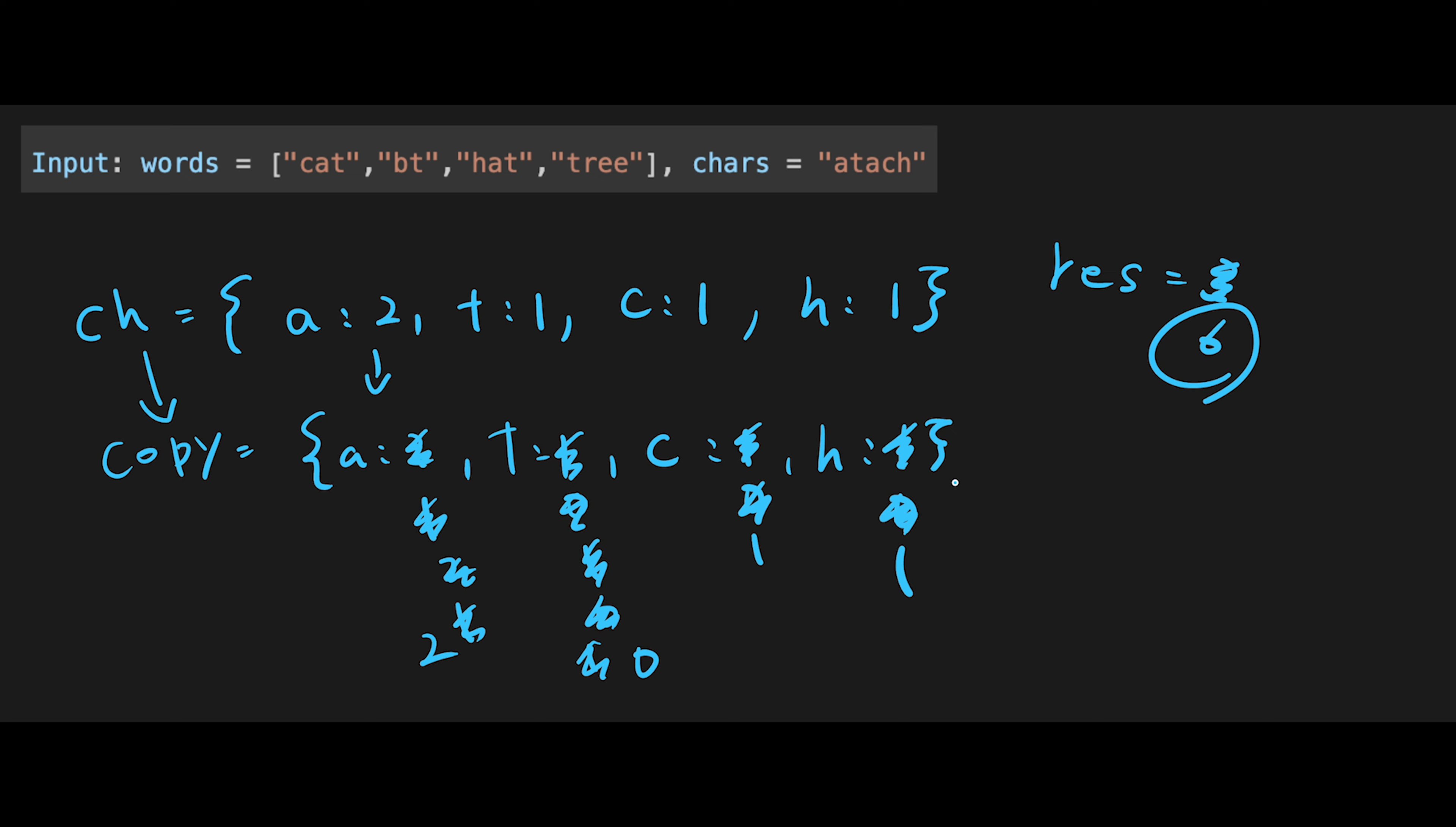Then what if we have extra character when a specific character was already 0 in hash map? Let's say next character is a, but current hash map is like a is 0 and t is 1, c is 1, and h is 1. In that case, of course we cannot create that word. So we don't add length of the word to result variable. It's obvious, right?